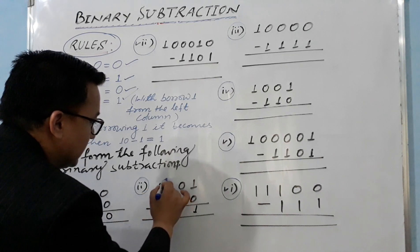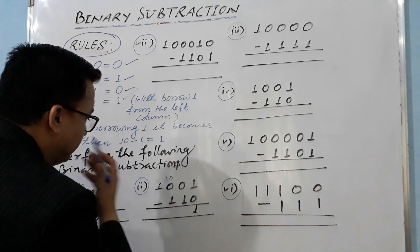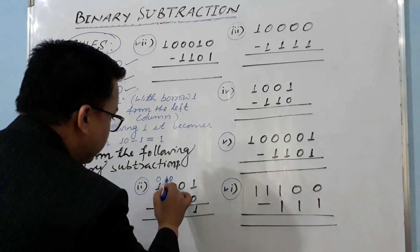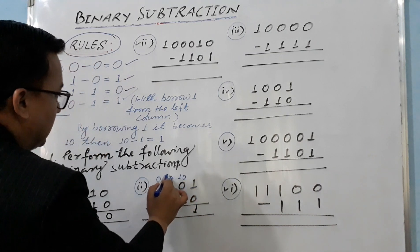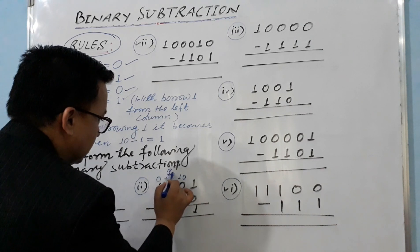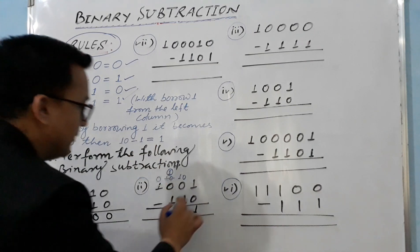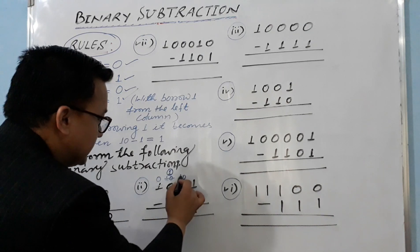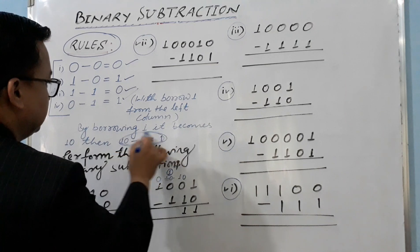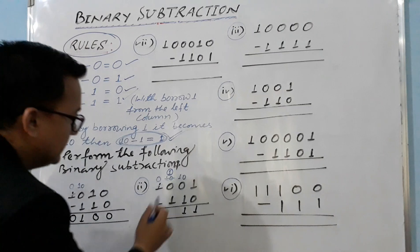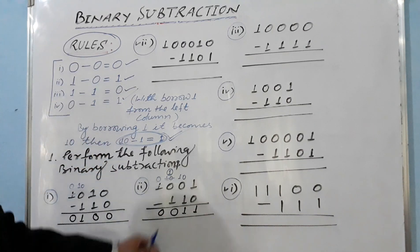So we take borrow from further left: that position becomes 10, and the intermediate zero becomes one after borrowing. Then from here we take borrow — it becomes zero — and the next position becomes 10. Since 10 minus one equals one, we write one. Now the borrowing process is complete. 10 minus one is one here. One minus one is zero. And here we get zero and zero. So the answer is simply 0011.